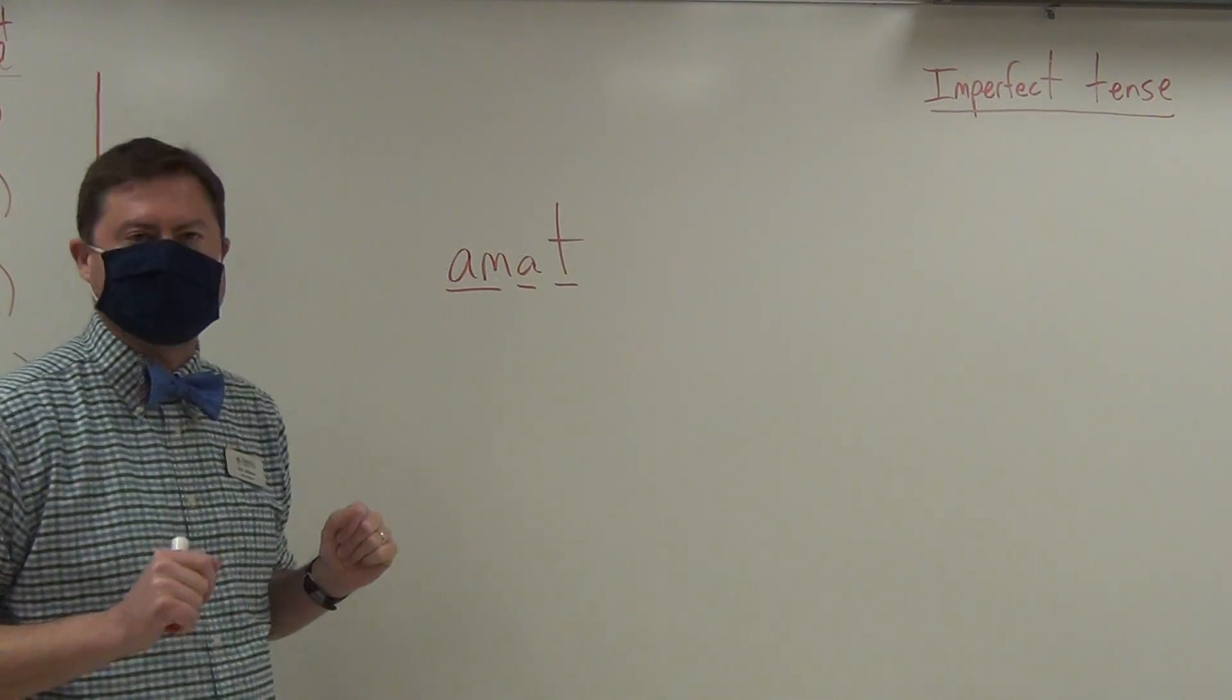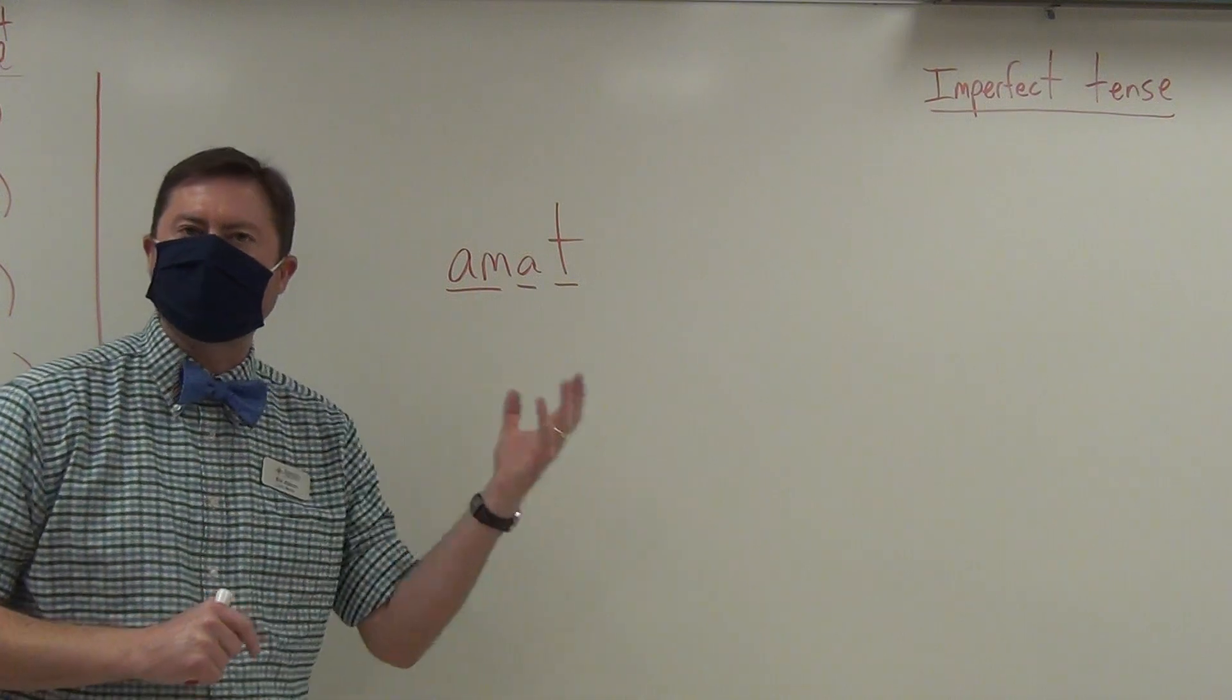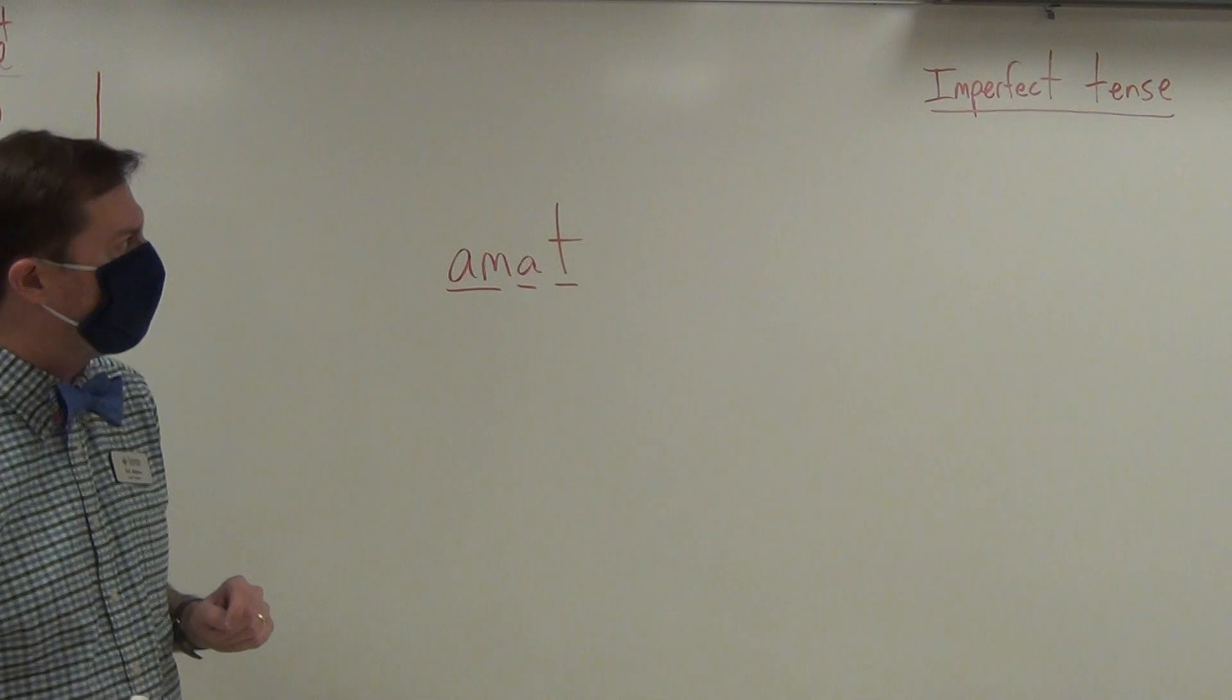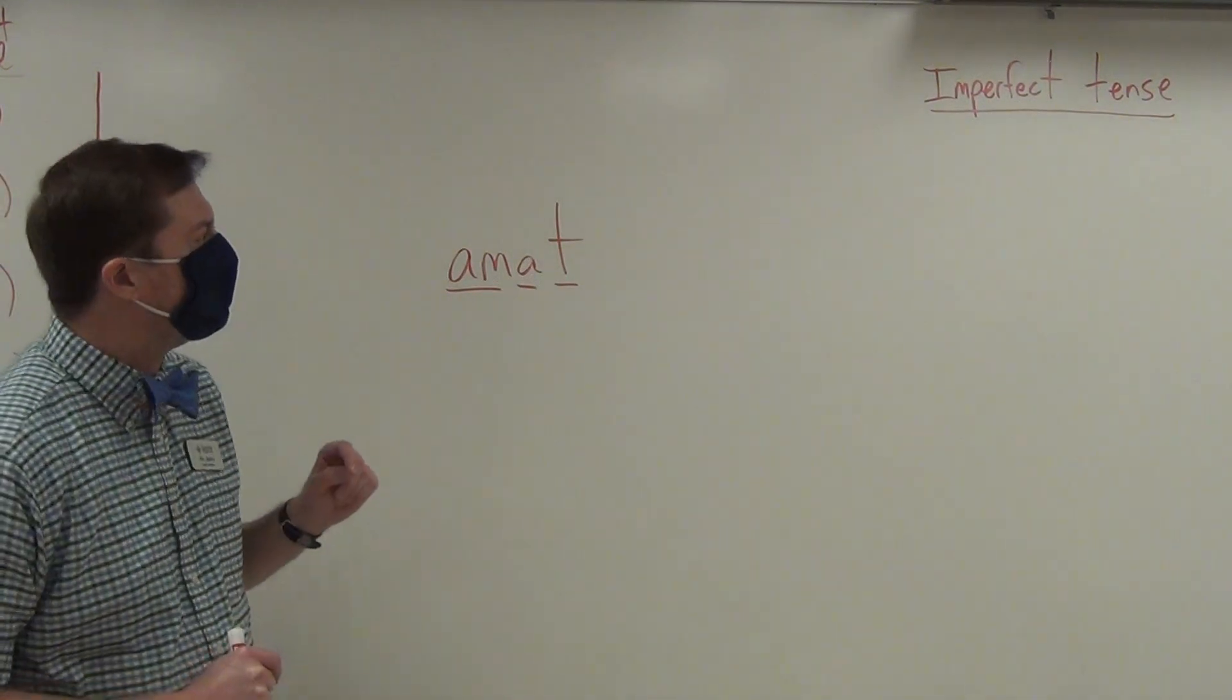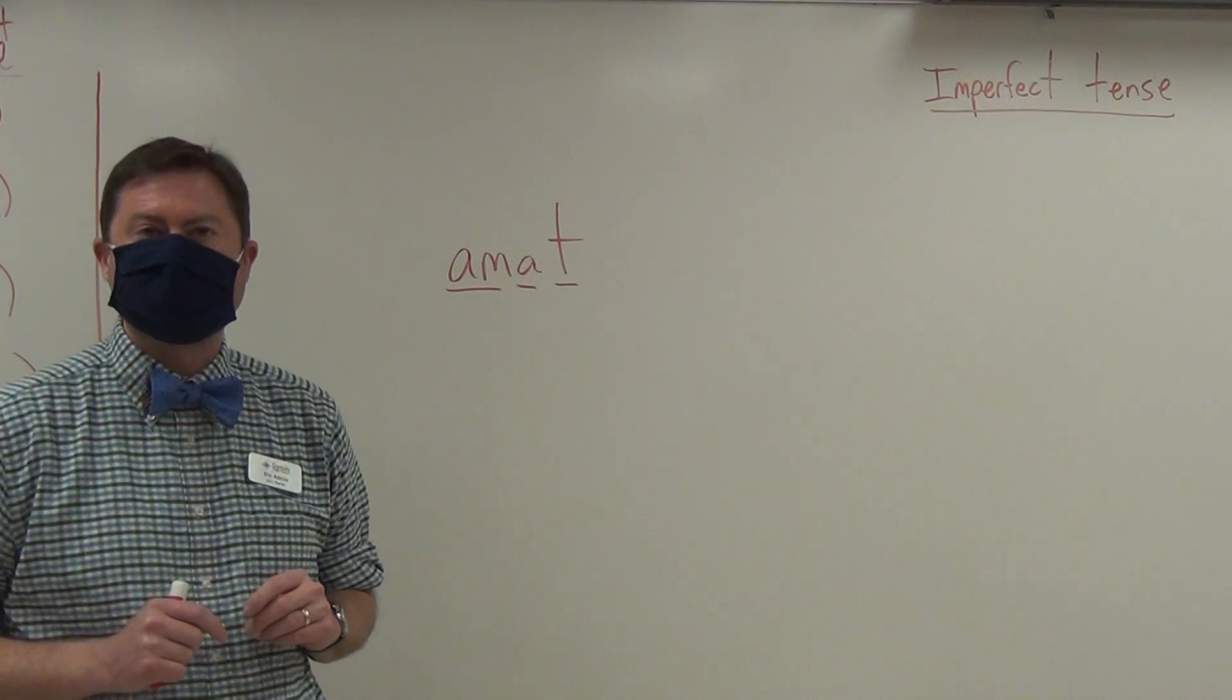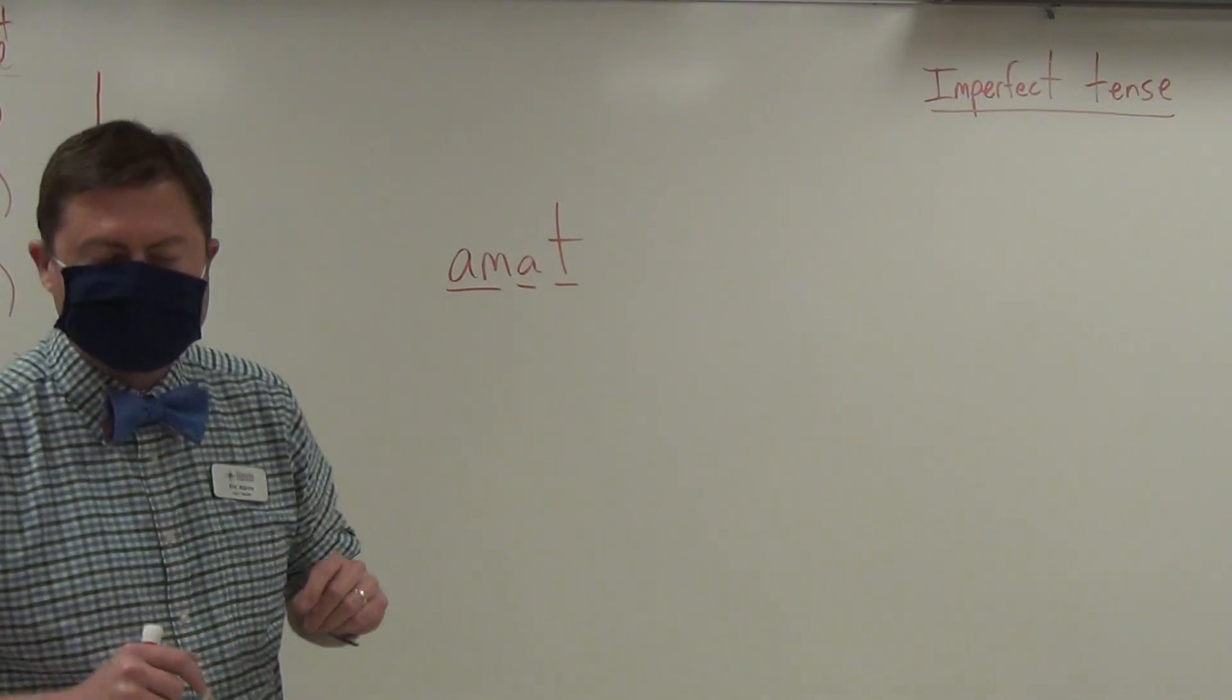And so likewise in Latin, to express action that is happening in the past there's two ways particularly. And we are concentrating on one way that is known as the imperfect tense. Your first item is past tense because that's what the imperfect tense is expressing.